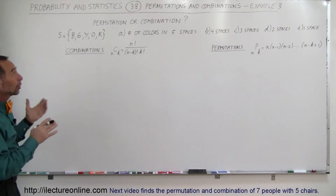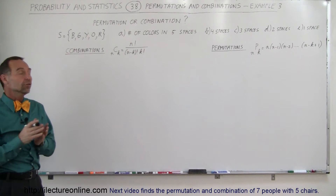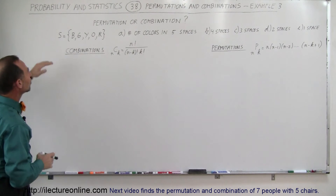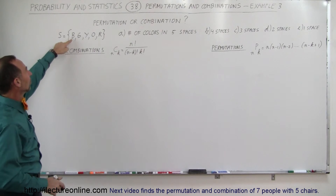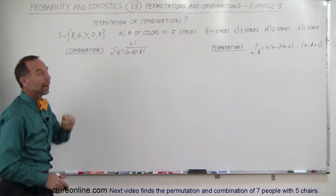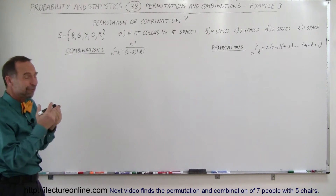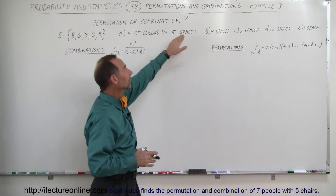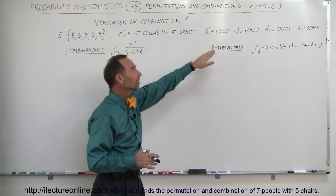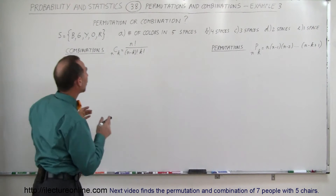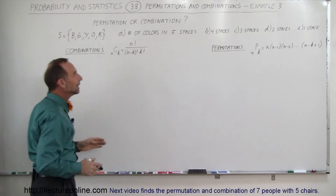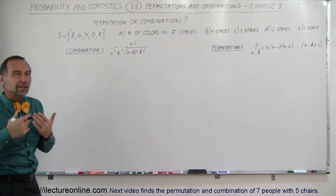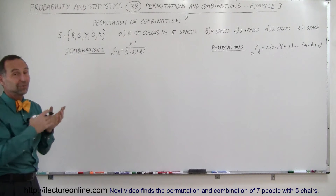Welcome to ElectronLine. We're going to take another look at permutations and combinations, and in this case we're going to do both — find the permutations and combinations of this special case. We have a sample space of five colors: blue, green, yellow, orange, and red. We're going to find the number of colors that can be arranged in five spaces, then four, three, two, and one space — for both combinations and permutations — so you can see how the numbers change.